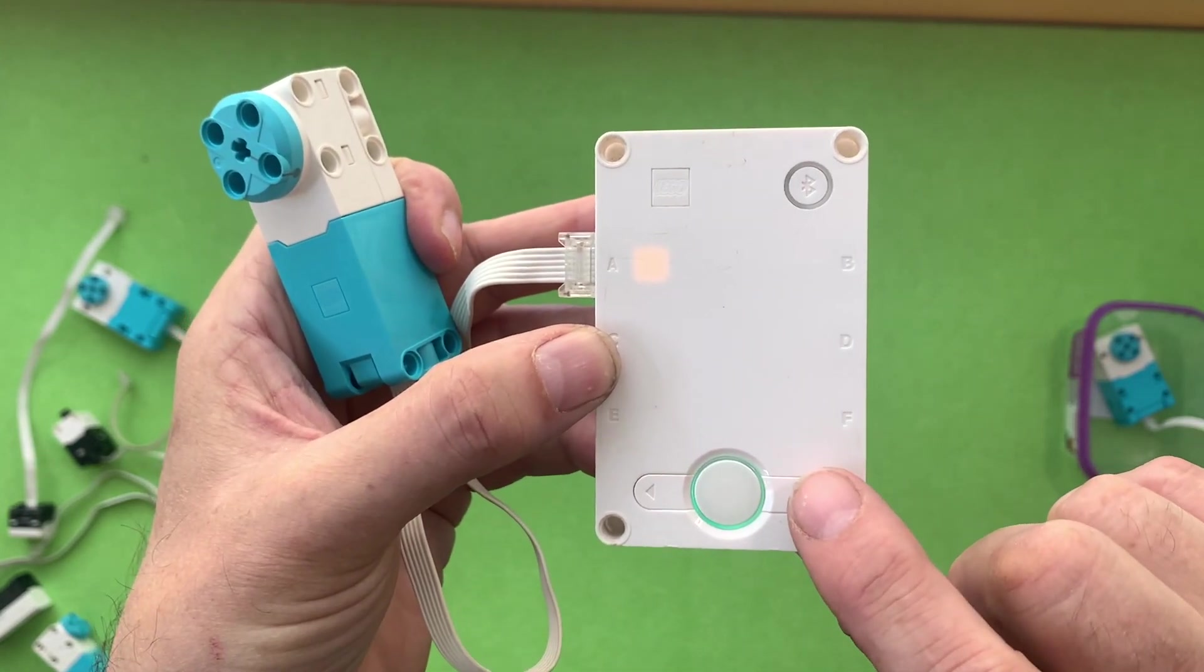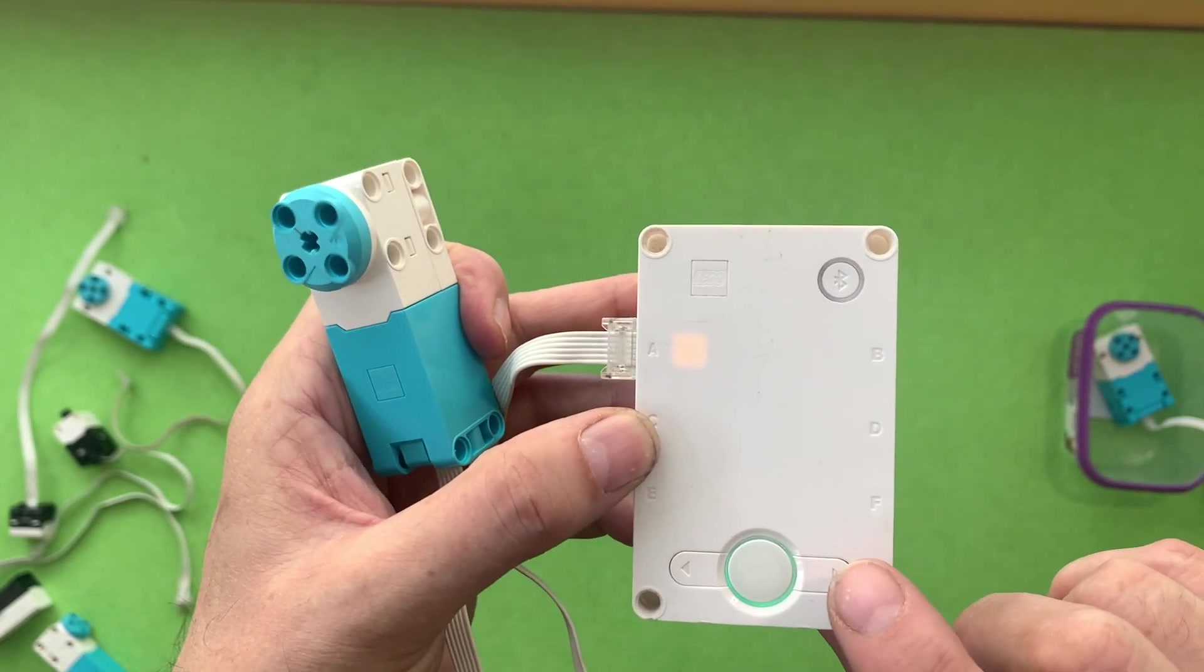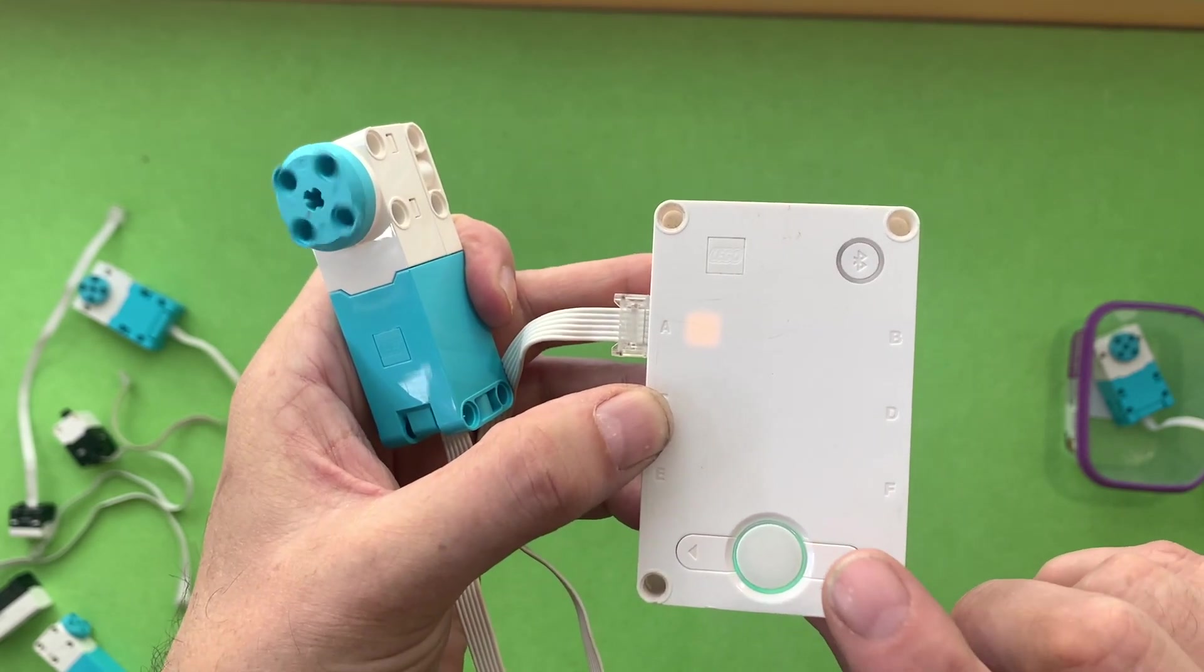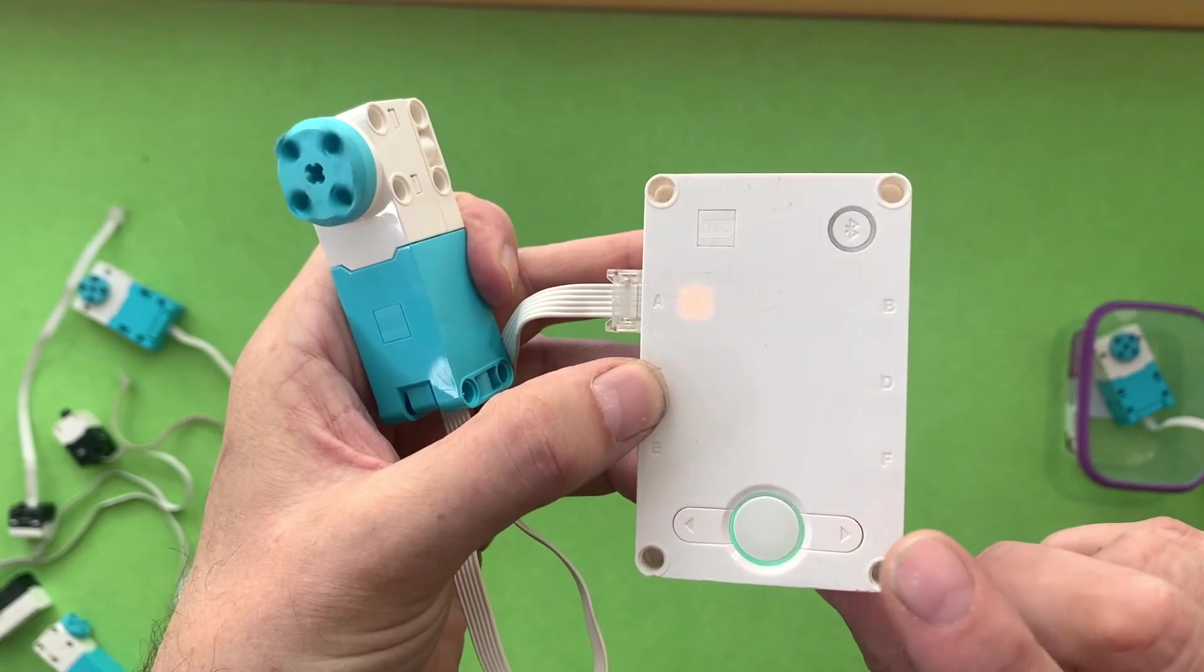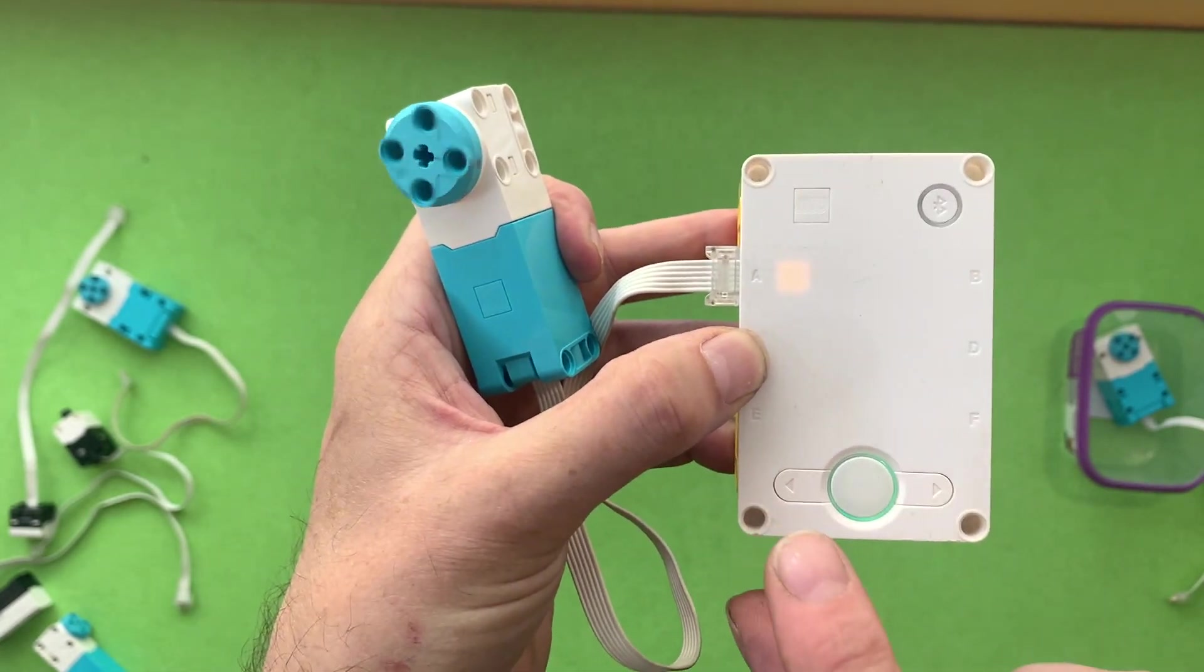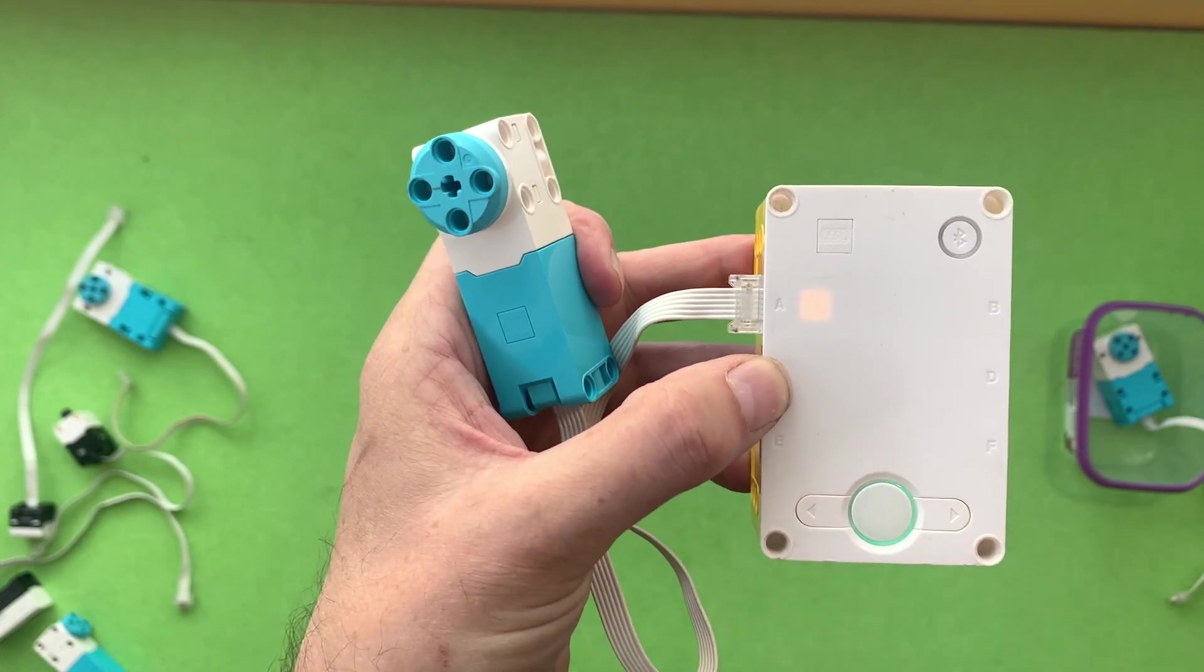And if you press the arrow keys, then it'll actually increase the speed of the motor in increments of about 20%. So if you keep pressing it, it gets faster and faster. And if you want to go slower, you can just press the opposite arrow key and it'll go slower and slower, all the way until it stops.